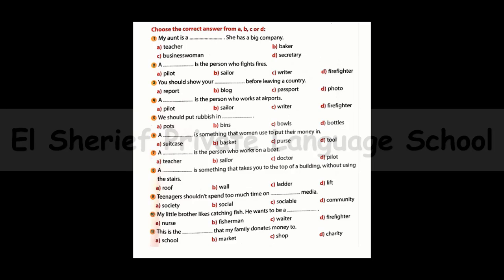Number six: A ___ is something that women use to put their money in. The answer is: a purse — letter C. Number seven: A ___ is a person who works on a boat. The answer is: a sailor.